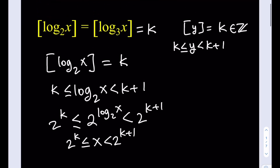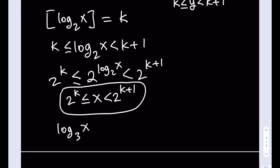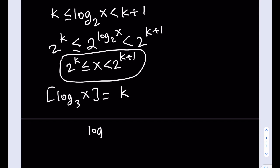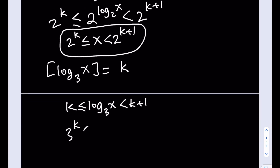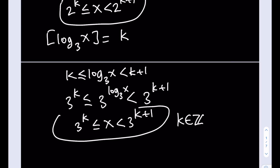Now let's do the same thing with base 3. If the floor of log base 3 of x equals k, then log base 3 of x is between k and k plus 1, which means 3 to the k is less than or equal to x, which is less than 3 to the k plus 1, where k is an integer. This is our second inequality.